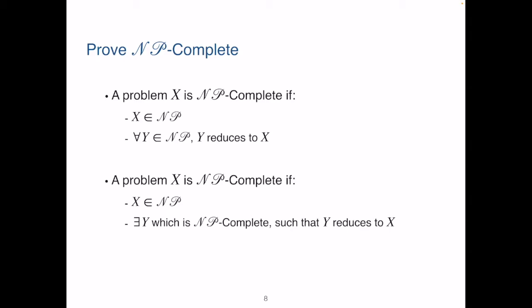one NP-complete problem. Then the transitivity of reduction tells us that if we can show one NP-complete problem that can reduce to X, we can prove that X is also NP-complete.